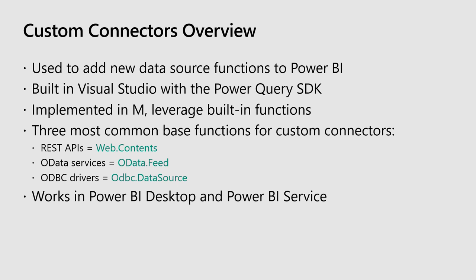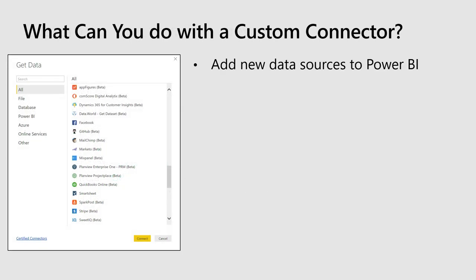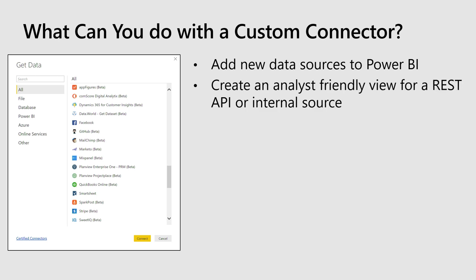What can you do with a custom data connector? The main purpose is to connect to a new or custom data source. The most common use is connectors over REST APIs. REST APIs are not analyst-friendly — they're written assuming a developer is sitting with the documentation open, knowing which parameters to call. What you do with a custom connector is normalize the data in a way that the analyst can interact with it normally.